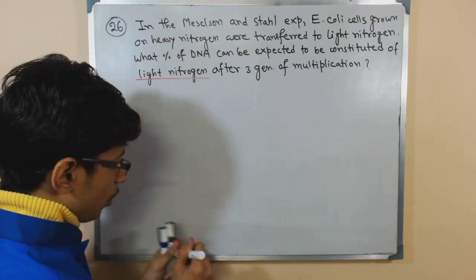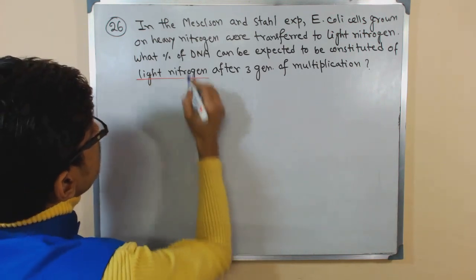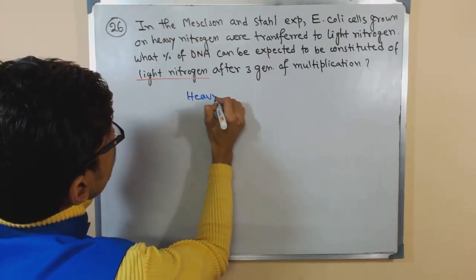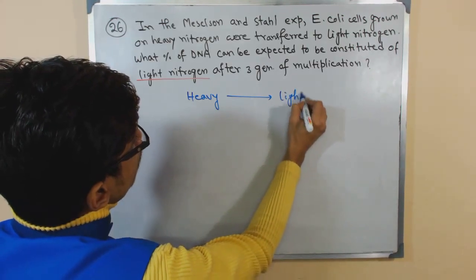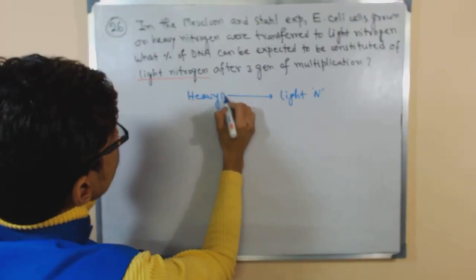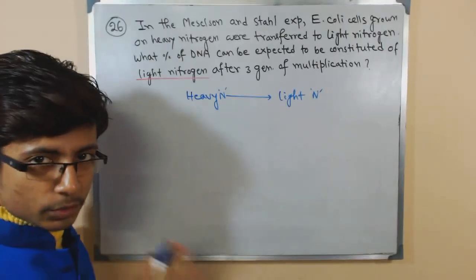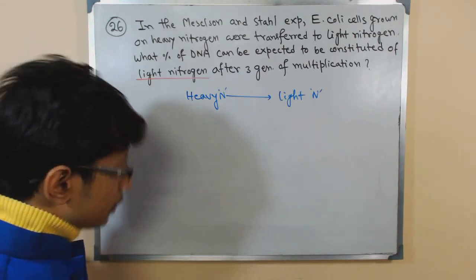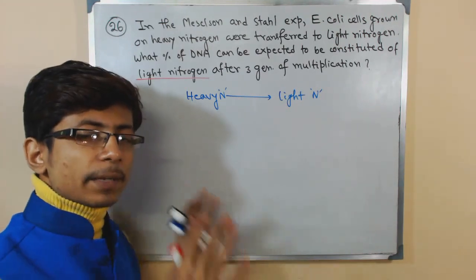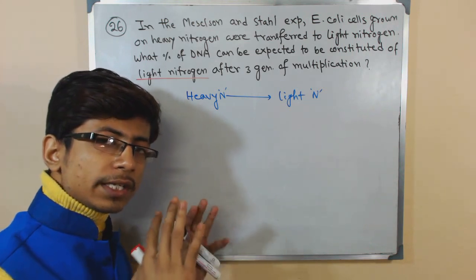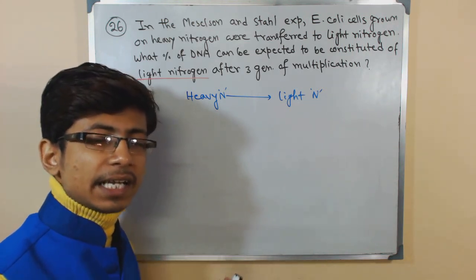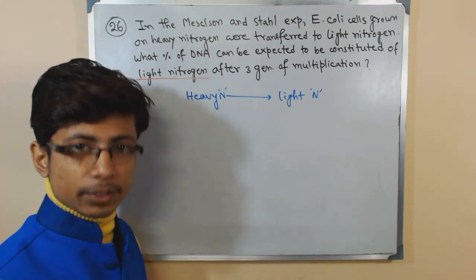So the scenario is, at the very beginning everything was in heavy nitrogen and then they are transferred into the light nitrogen. That is the actual thing. Now, when those cells are placed in heavy nitrogen, all their bases will be tagged with heavy nitrogen. As a result, their DNA will have heavy nitrogen.